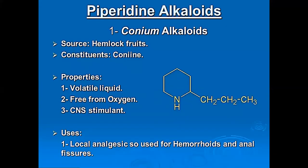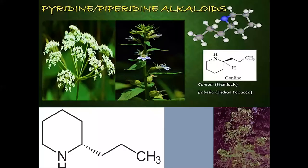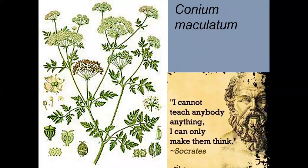Pyridine alkaloids — for example, conium alkaloids. Source: hemlock fruits. Properties: volatile liquid, free from oxygen, CNS stimulant. You can see sources of pyridine and piperidine alkaloids in nature, for example Conium maculatum.